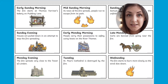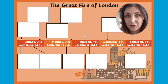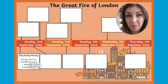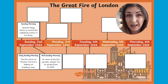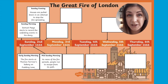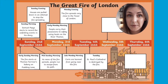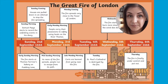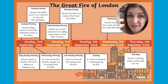Have a read through the timeline cards, which contain information about what happened and when it happened. You can then cut them up and mix them together. Can children put the cards back into time order? Once you're done, you'll then have a full timeline describing the events of the Great Fire of London, which you could use to support learning or even as a starting point to writing a newspaper article.